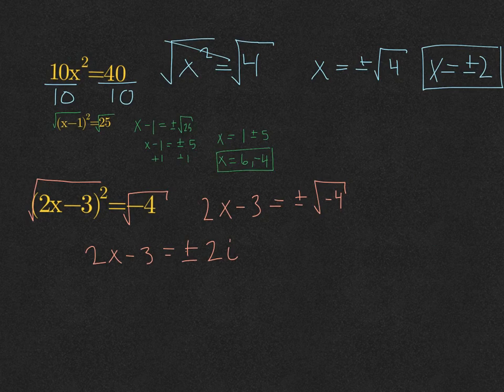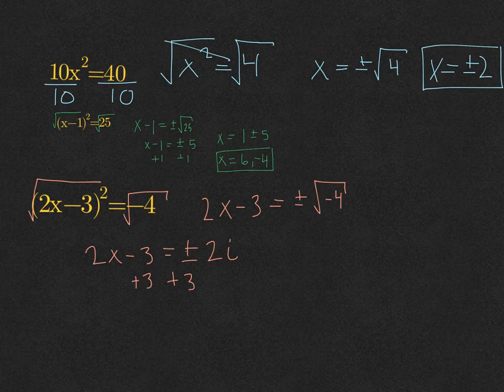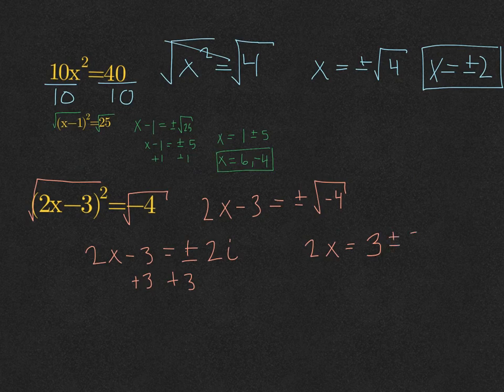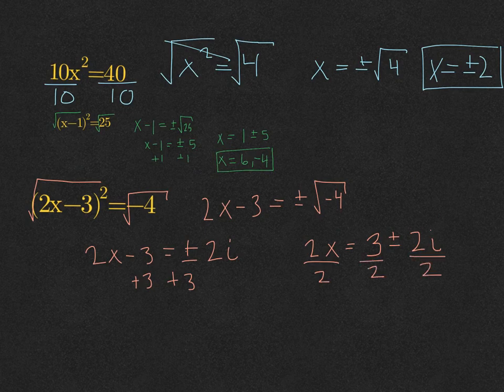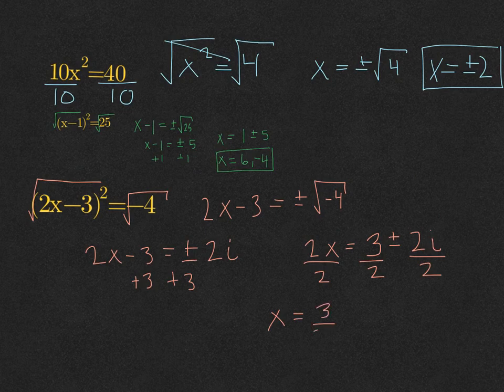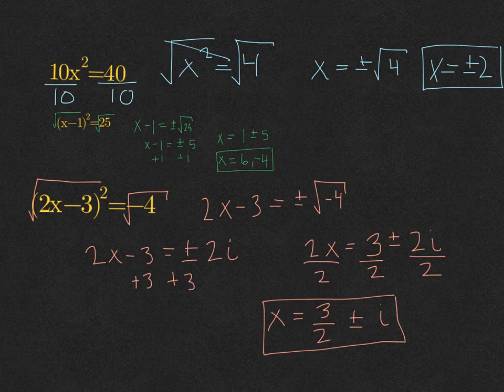Then we add 3 to both sides. I like to write the constant in front of the plus or minus, so it would be 3 plus or minus 2i. Then divide every part by 2. We end up with x equals 3/2 plus or minus i. That's our final answer.